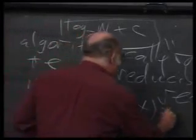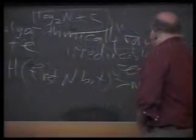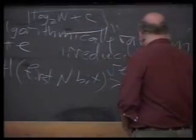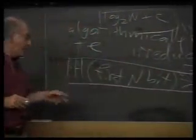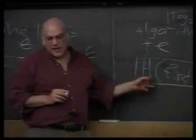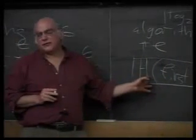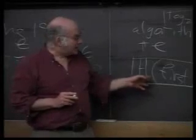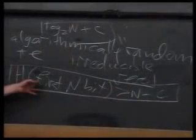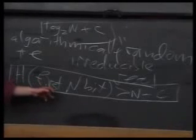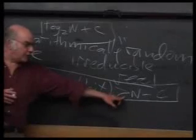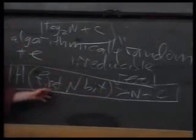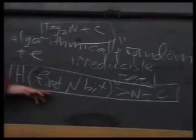So computable reals have very low program size complexity. And, however, you can show, and I need something called self-delimiting programs, which I don't want to talk about. To get the right definition of this concept would take a little bit of time, so I won't take the time. There is a definition of algorithmically random real number, which goes like this. It says the program size complexity, the number of bits of information you need to tell a computer how to calculate the first n bits of this number, is very high. And it's greater than n minus. There is a c such that for all n, this is the case.